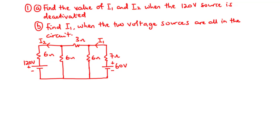Given a circuit with two or more sources, superposition theory allows you to consider one source at a time while deactivating the other, then consider the second source while deactivating the first. That is exactly the approach we are going to carry out to solve this problem. So for Part A, we will find I1 and I2 when the 120 volt source is deactivated.